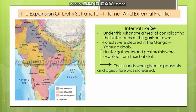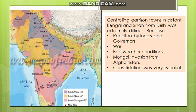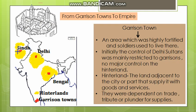You use the Internal Frontier for a garrison town. First, in the garrison town, you can use the garrison towns of the Bengalis, Delhi, Sindh, and Bengal. This is Delhi, Sindh, Bengal - and this is the area of Sindh, Dilli, and Bengal.